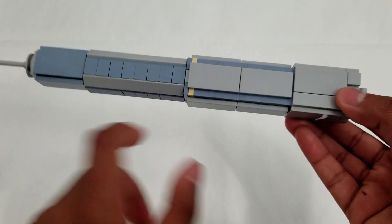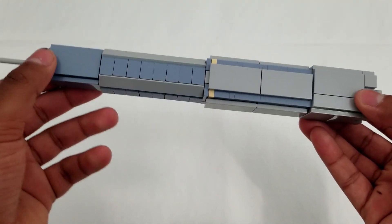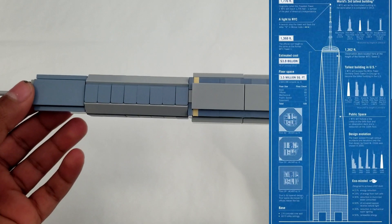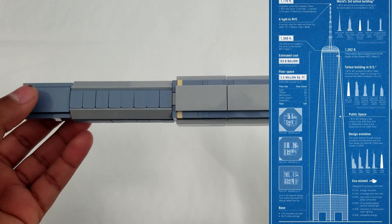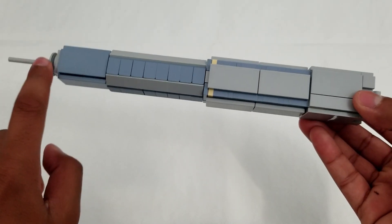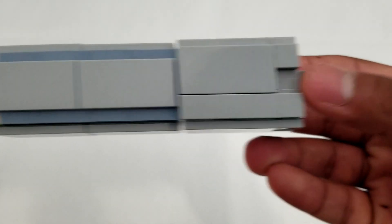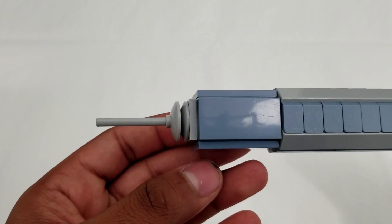We will start from the foundation of the building and go up to the needle of the building. If you take a look at the blueprints of the building, you can split up the building into three parts: Foundation, the main body, and the spire at the top.